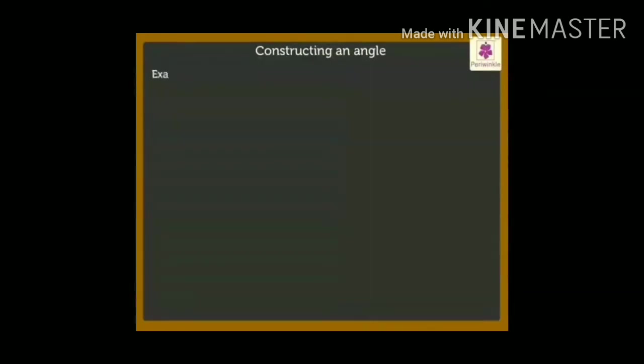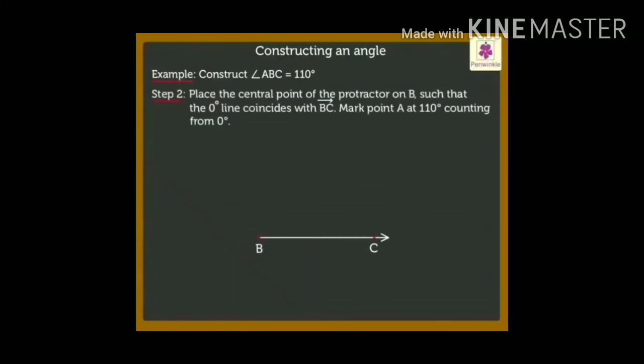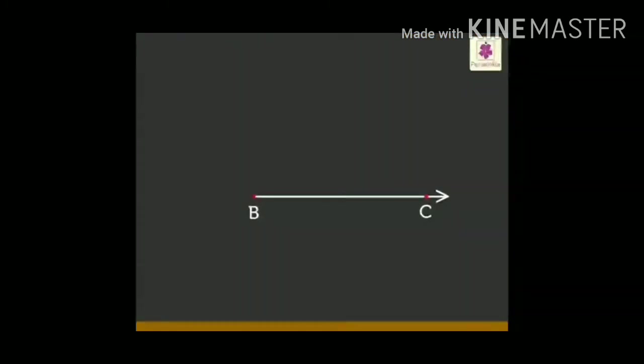Now, we will construct angle with the help of a protractor. Till now we have learned how to measure the given angle. So, now I will construct 110 degree. Step number 1. With the help of scale, draw a base line. Write the name BC.